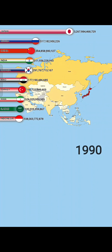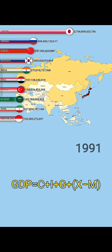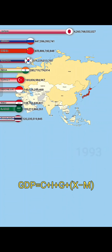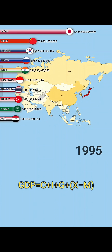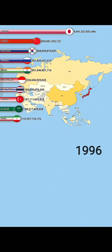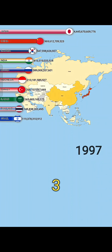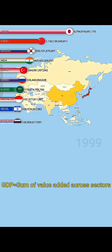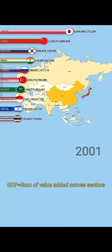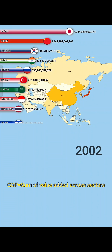Number two, the income method sums all incomes from wages, rents, interest, and profits earned in the economy. And number three, the output method totals the value added by every producer across all sectors.